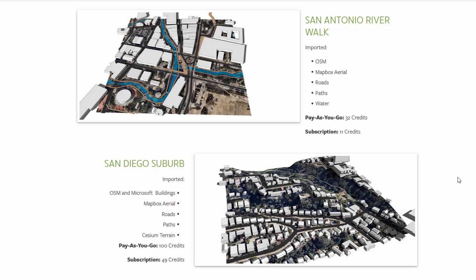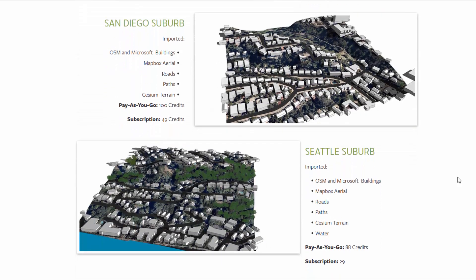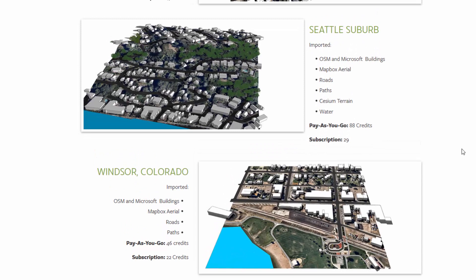San Diego suburb — this one has terrain and a lot more buildings and roads — costs 100 credits for this quarter mile versus 49 credits with the subscription. With a subscription, the savings per area will probably range anywhere from 50% or greater in terms of credit savings, depending on what you're importing. Seattle suburb with terrain cost 88 credits, with the subscription 29 credits. Windsor, Colorado was 46 credits versus 22. The water there likely skewed the credits. That's how the credit system works and what the benefits are.